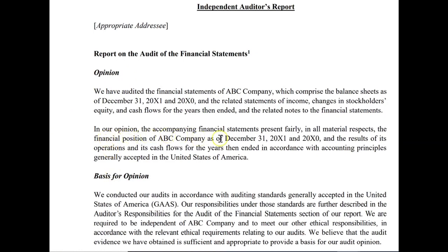The opinion section is first. 'In our opinion' — the accompanying financial statements present fairly in all material respects the financial position of the company. Above that is a paragraph that basically introduces what we've done: we've audited the financial statements, which comprise the balance sheet, the related statements of income, changes in stockholders' equity, and cash flows. These two paragraphs make up what's called the opinion section of the audit report for the non-issuer.